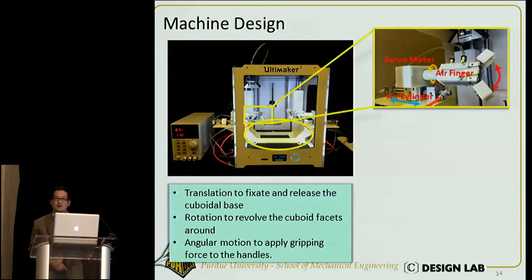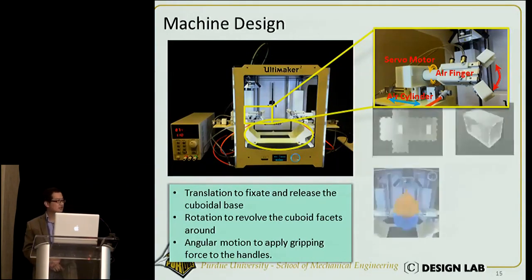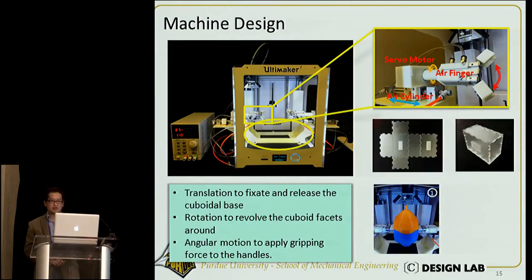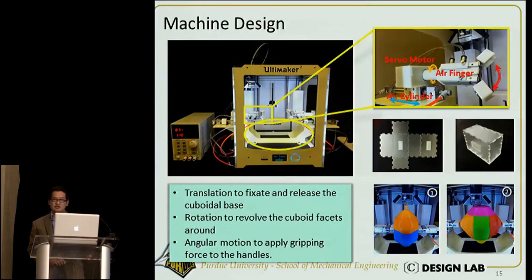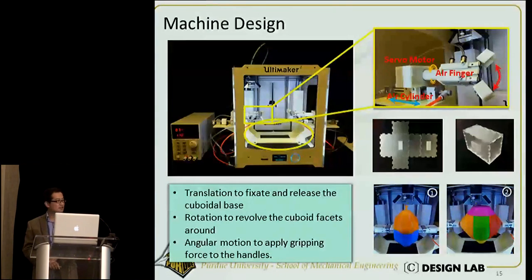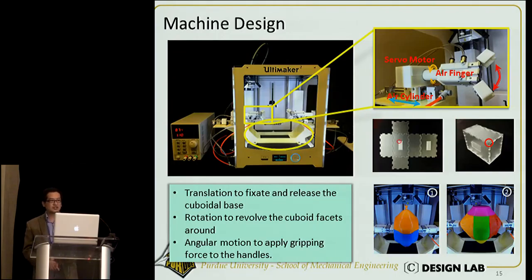As mentioned, there are two rounds of revolving and printing. In the first round, we close the two air fingers and fit them into the slots, then print the first four geometries. Then we release the part, put the two handles into the air fingers, and print the remaining two geometries. Before each revolving, we perform a calibration: for the first round we detect the corner point of the cuboid, and for the second round we detect the corner point of the slots. By knowing the corner points, we modify the G-code so the geometry is printed at the right place.